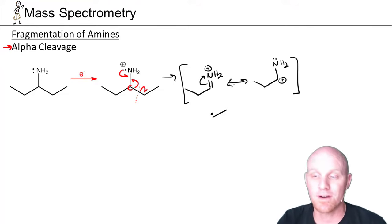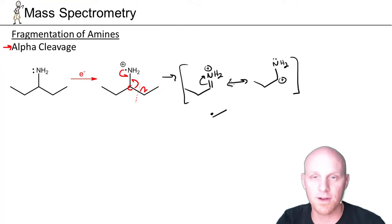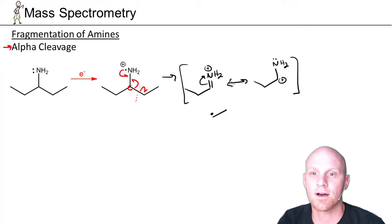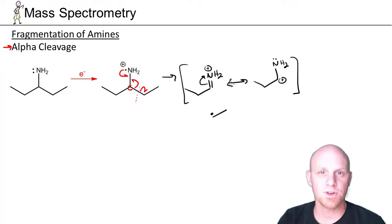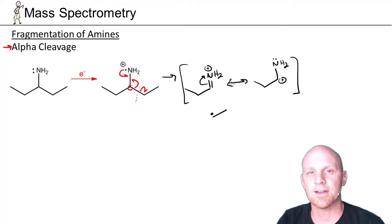Being resonance-stabilized makes this a very stable fragment, which is why alpha cleavage is such a common fragmentation pattern for amines, as well as alcohols and alkyl halides.